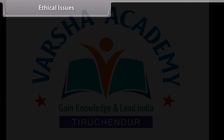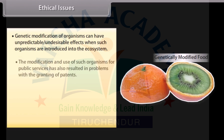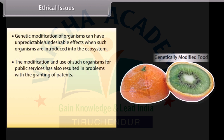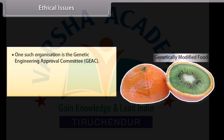Ethical issues: Genetic modification of organisms can have unpredictable, undesirable effects when such organisms are introduced into the ecosystem. The modification and use of such organisms for public services has also resulted in problems with the granting of patents. Hence, the Indian government has set up organizations authorized to make decisions regarding the validity of genetic modifications and the safety of introducing GMOs for public services. One such organization is the Genetic Engineering Approval Committee.